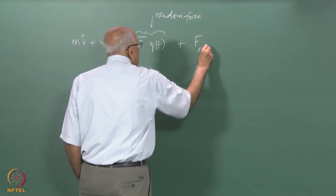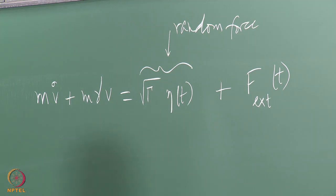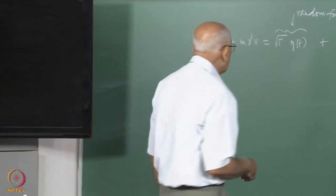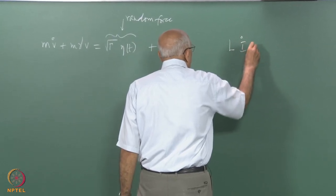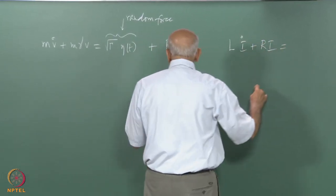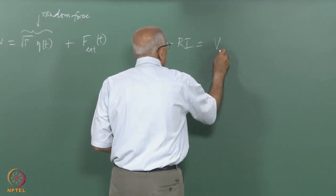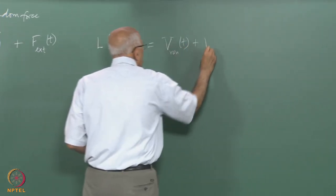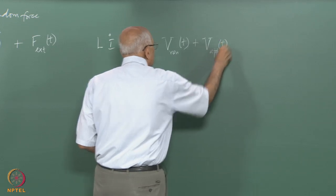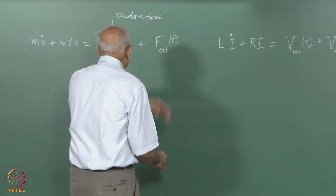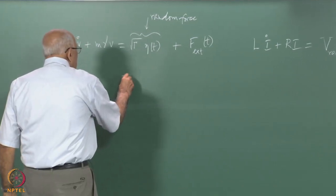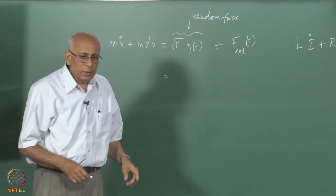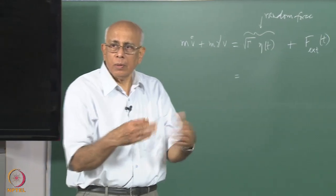Suppose you apply some external force as a function of t — this is what you would get. Similarly, the resistance model in an LR circuit had an equation like L·i̇ + R·i equal to a fluctuating voltage V_random(t) plus some applied voltage V_applied(t). There was a correspondence between these two things, and there was a fluctuation-dissipation theorem relating the strength of this noise to the dissipation — called the second fluctuation-dissipation theorem.